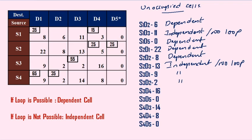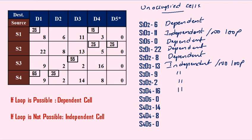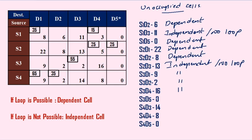Next case: S3, D4. We have two possibilities — left side or upward direction. Going left — no more occupied cells, no upward cells — not possible. Going the only other direction: left, down, right — not possible. So loop is not possible for S3, D4. Next: S3, D5. Going left direction — left, left, left, down, right — not possible, no upward cells available. Only one possibility remains — also not possible. So loop is not possible for S3, D5.